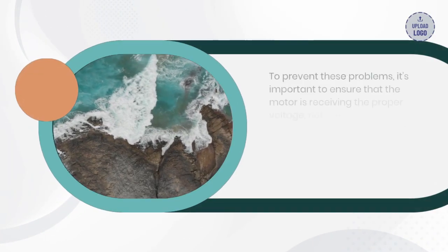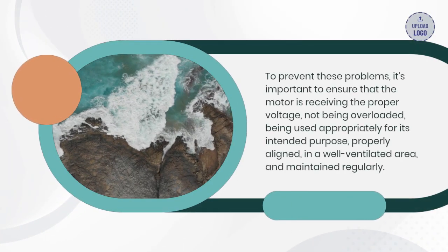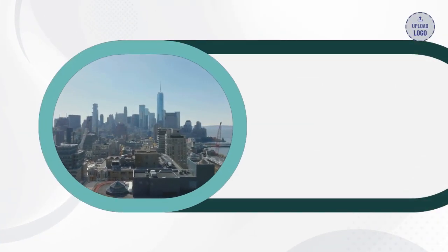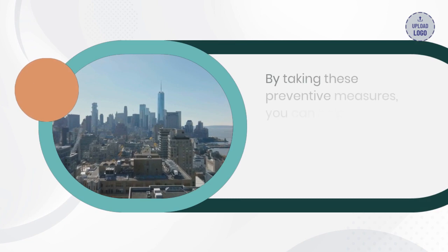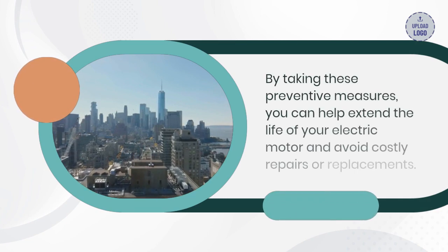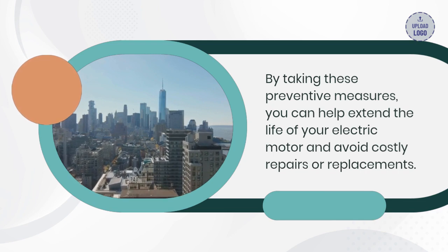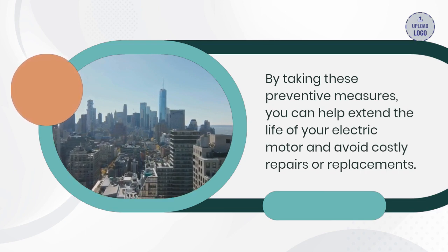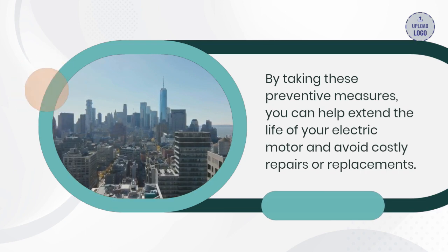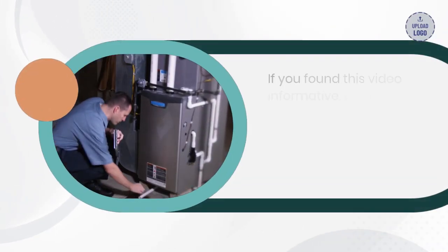In summary, electric motors are vital components that can be prone to various issues. To prevent these problems, it's important to ensure that the motor is receiving the proper voltage, not being overloaded, being used appropriately for its intended purpose, properly aligned, in a well ventilated area, and maintained regularly. By taking these preventive measures, you can help extend the life of your electric motor and avoid costly repairs or replacements.